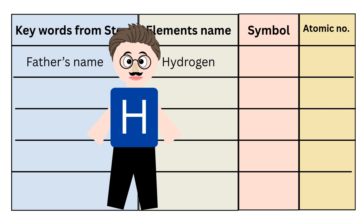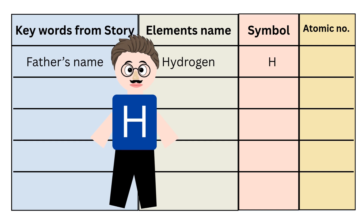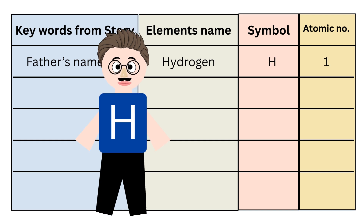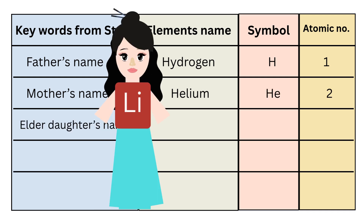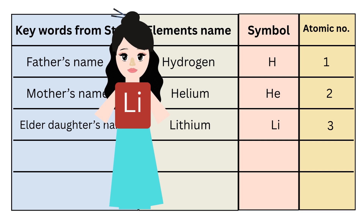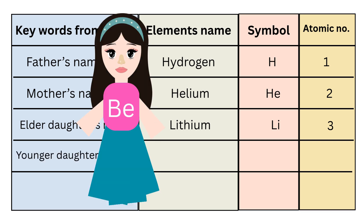So the element name is Hydrogen, symbol is H, and atomic number is 1. For the second element, remember the mother's name, that is Helium. So the element name is Helium, symbol is He, and atomic number is 2. For the third element, remember the elder daughter's name, that is Lithium. So the element name is Lithium, symbol is Li, and atomic number is 3.